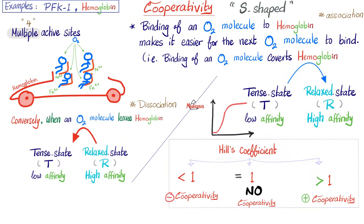There is a measure of cooperativity known as the Hill coefficient. If it's exactly one, there is no cooperativity. If it's greater than one, there is positive cooperativity — just like hemoglobin. If it's less than one, there is negative cooperativity. Positive cooperativity means binding of the first one increases the affinity for subsequent ones. Negative cooperativity means binding of the first one lowers the affinity for subsequent ones. Hemoglobin is not the only protein with cooperativity — some enzymes have it too, such as PFK1, phosphofructokinase 1, which you will study in glycolysis. We'll talk about that in a subsequent video.